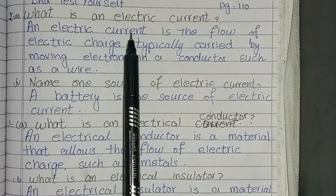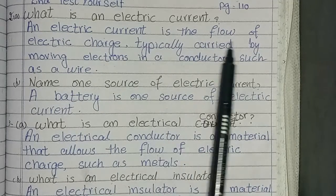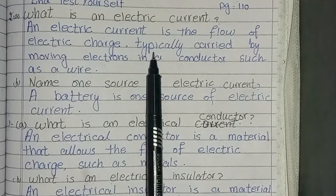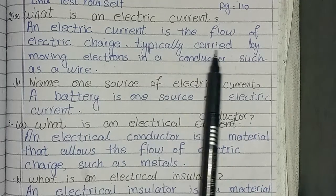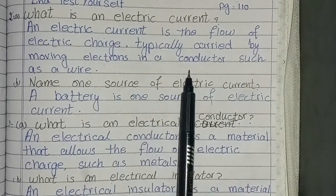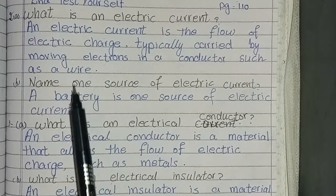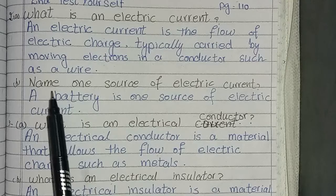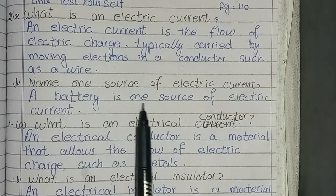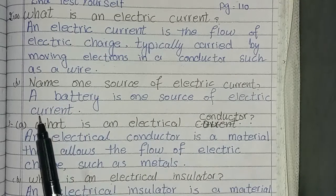What is an electric current? An electric current is the flow of electric charge, typically carried by moving electrons in a conductor. Part B: Name one source of electric current. A battery is one source of electric current.